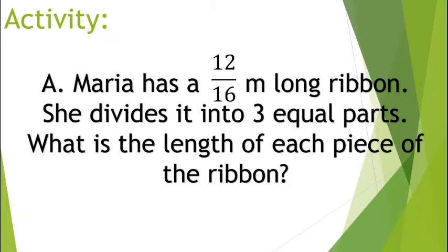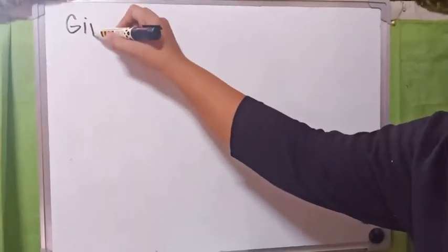Let's have our first activity. Maria has a 12 over 16 meter long ribbon. She divides it into 3 equal parts. What is the length of each piece of the ribbon? After reading carefully the word problem about Maria, we will now identify what would be the given numbers that are important for us to find out what is the length of each piece of the ribbon.